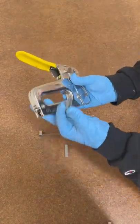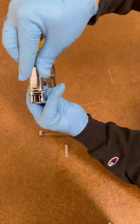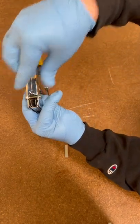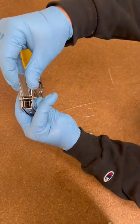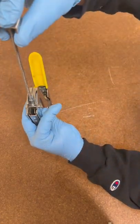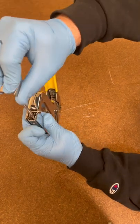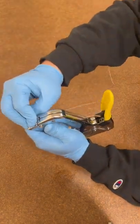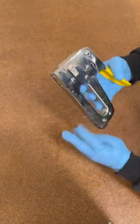Take your new sleeve of staples and you're going to run it up right along the guide, just like that. See the guide? Just like that. Now retake the locking mechanism, in, up, and locked. That's it.